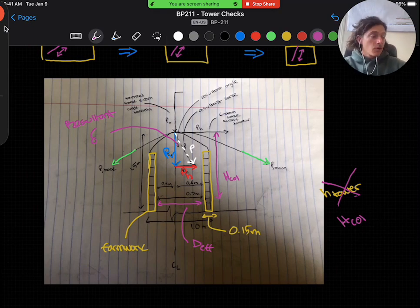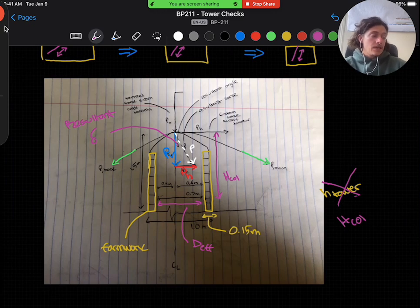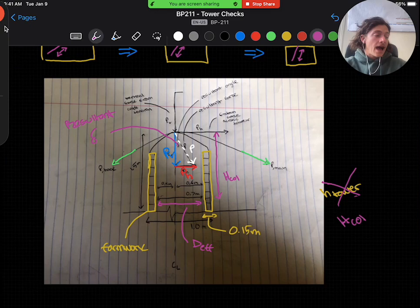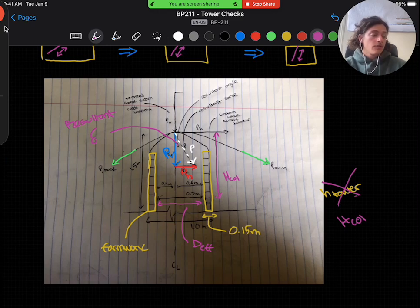Now, to actually perform the check, we need to calculate the resultant angle, the maximum eccentricity allowed, and the calculated eccentricity to compare. There is no factor of safety here. We are only checking that the calculated is less than the allowable. And the resultant angle we can find as the arctan of the ratio of horizontal over vertical forces, which is simply trigonometry.